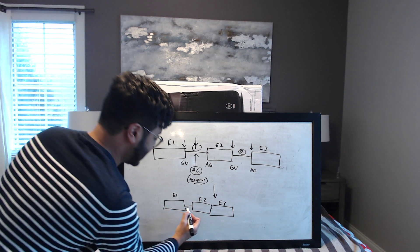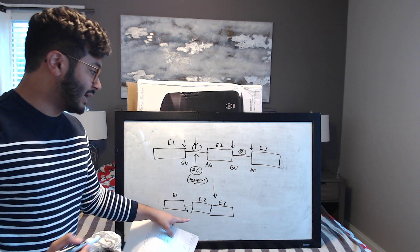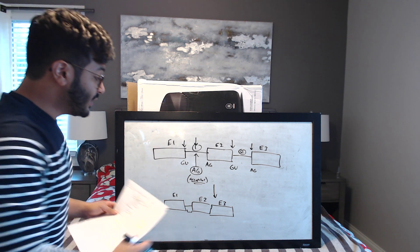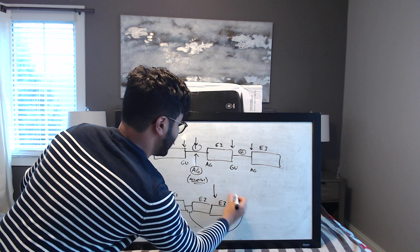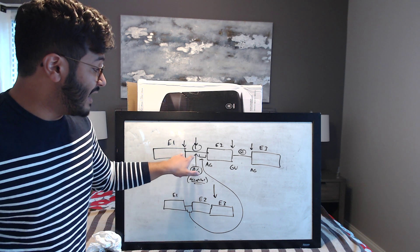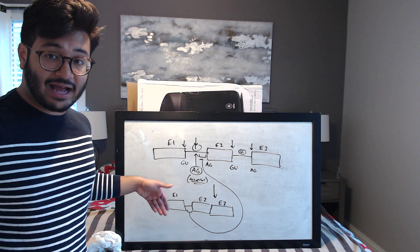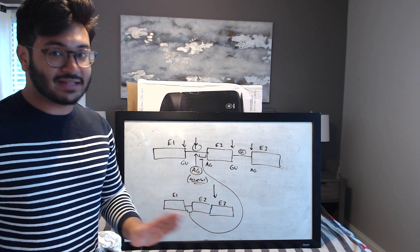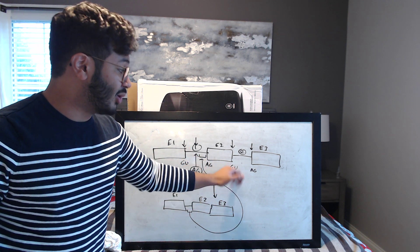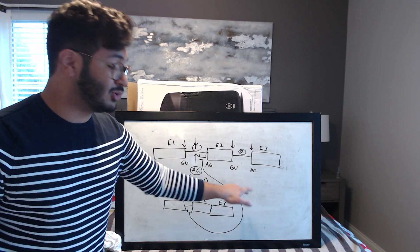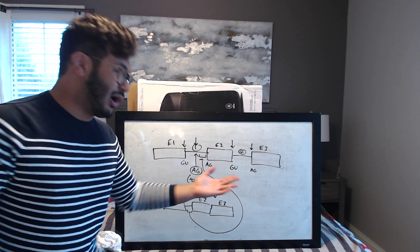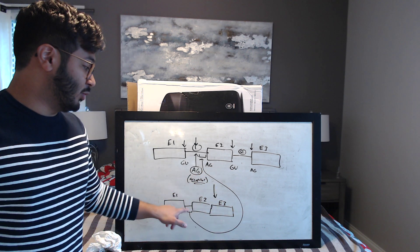The difference is the final answer now includes a little extra snippet — a segment that came from the portion of intron one between the new acceptor site and the original acceptor site. Since the acceptor site got moved up earlier, everything between the donor and the new acceptor gets spliced out, but the remaining segment of intron one is kept in. You then proceed to the next donor-acceptor pair and splice that out. The result is a longer mRNA segment compared to the original.